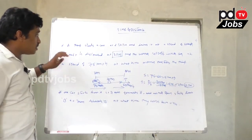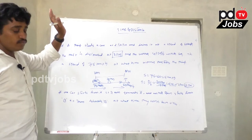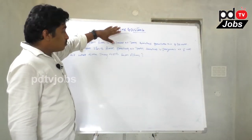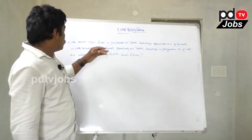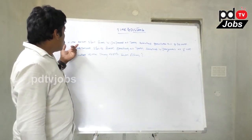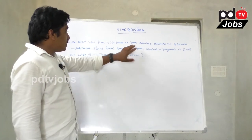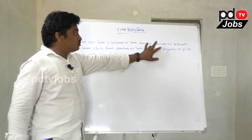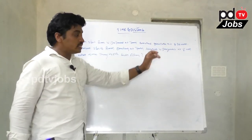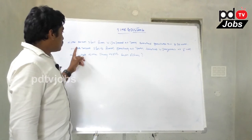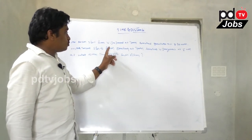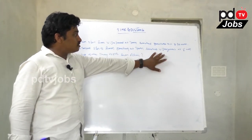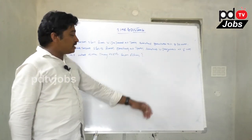One more example: One person starts from Vijayawada at 7 AM and reaches Guntur at 8:30 AM. Another person starts from Guntur at 7 AM and reaches Vijayawada at 8 AM. At what time do they cross each other?